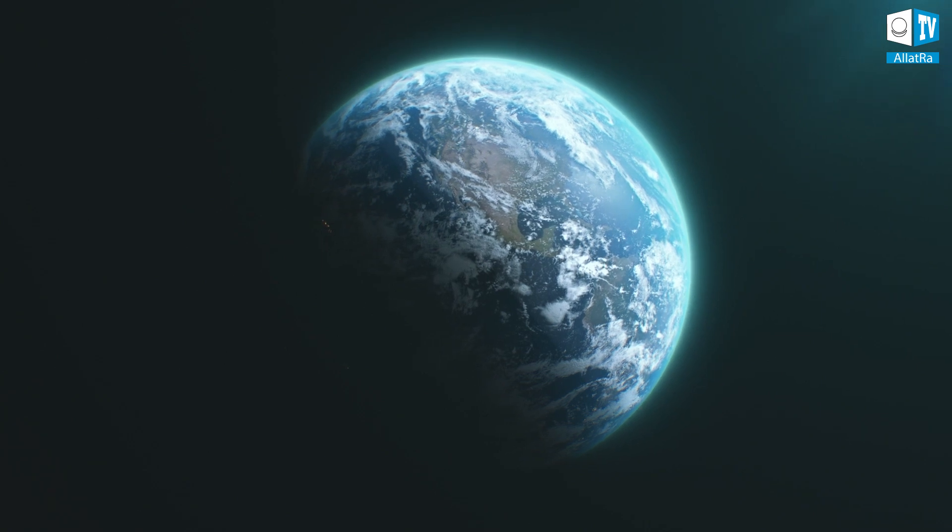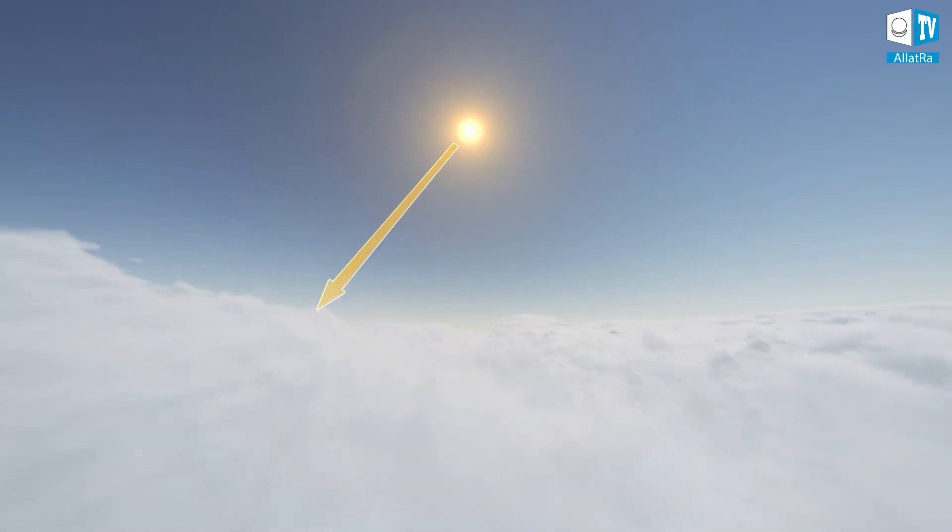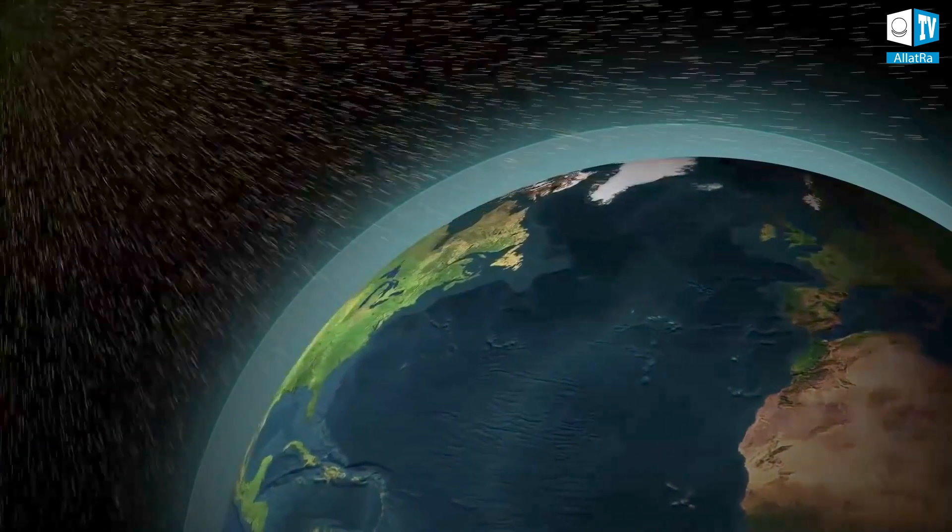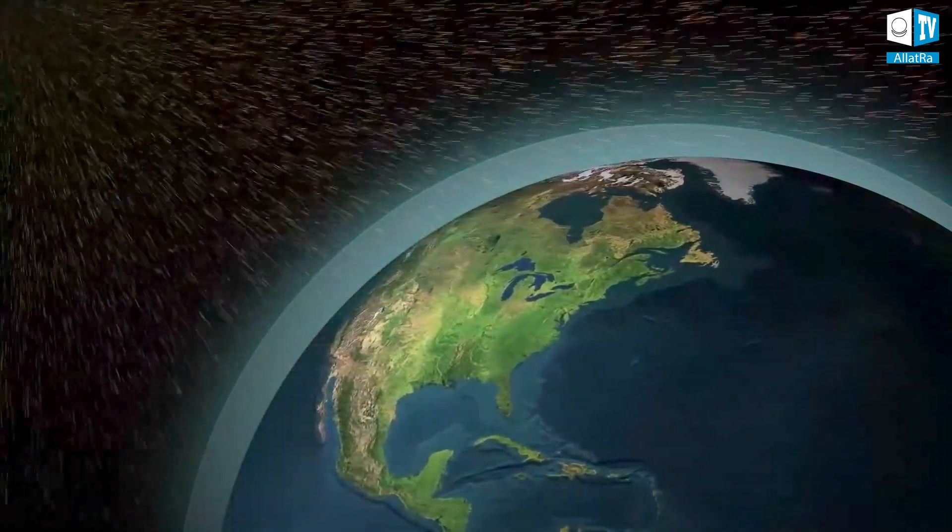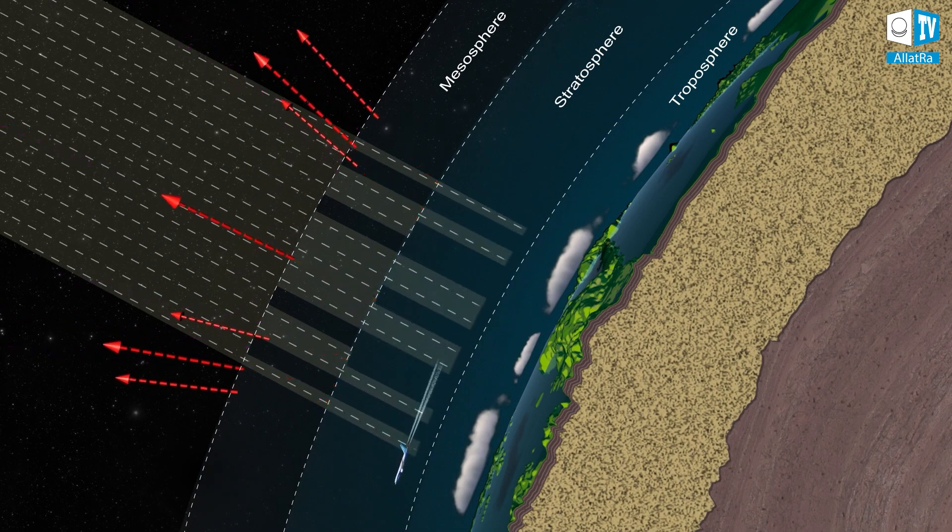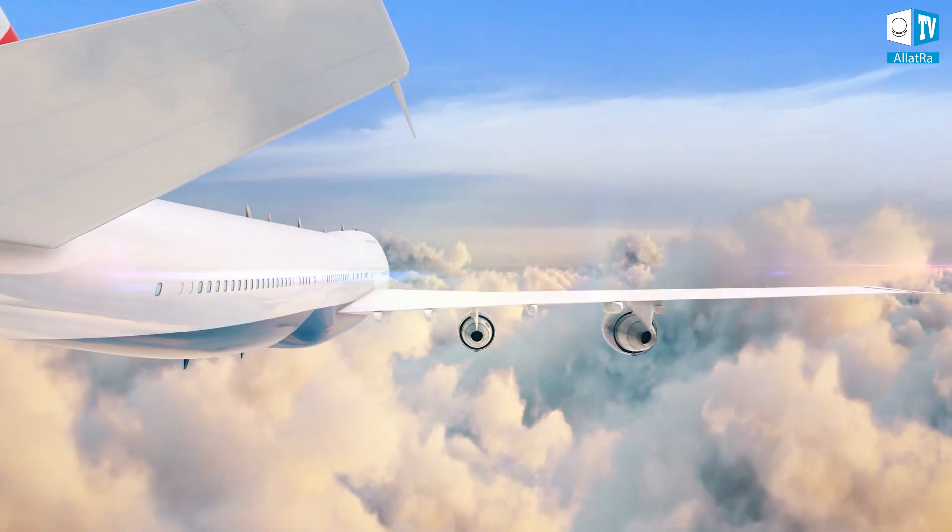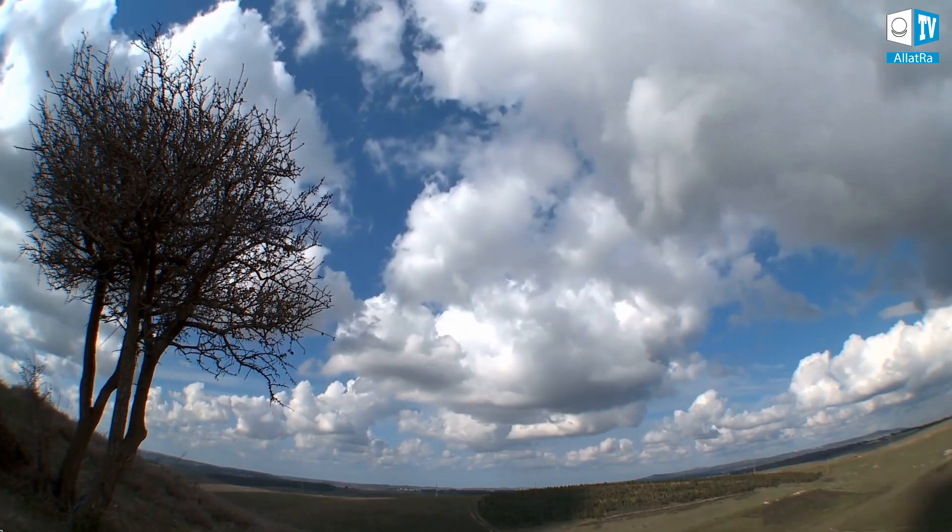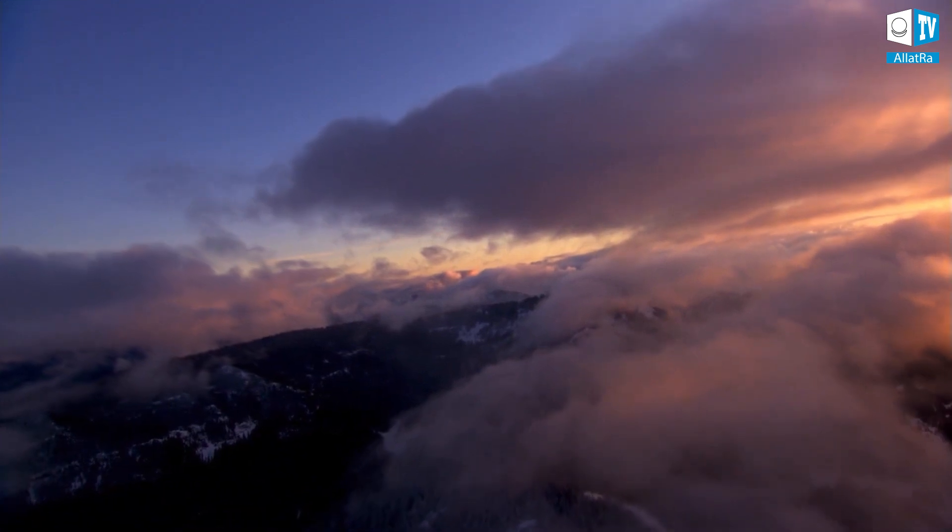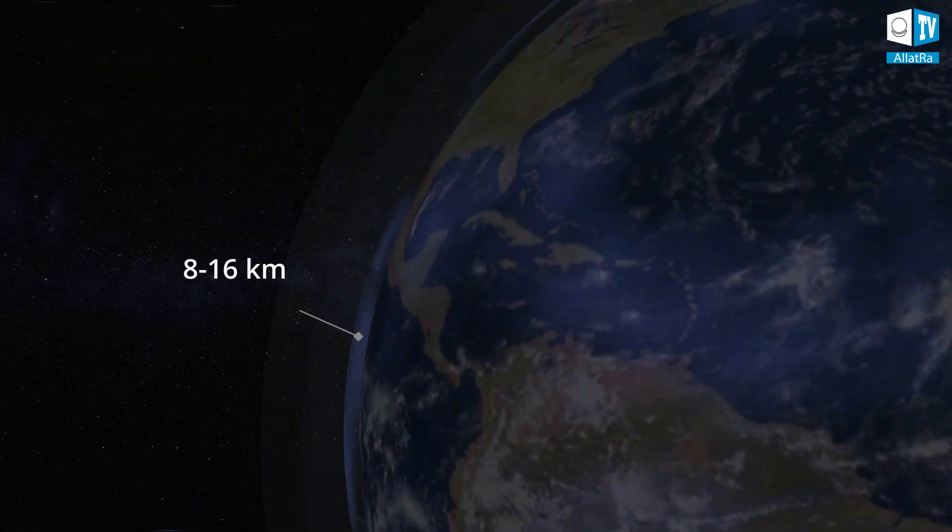The atmosphere is a gaseous envelope that rotates along with the Earth as a single whole and regulates the flow of heat and cold, creating comfortable conditions. Its role is to protect living organisms from destructive cosmic impacts. It is like the protective plating of a ship. It consists of several basic layers. Each layer of the atmosphere performs a different function. The troposphere is the lowest layer of the atmosphere. Because of its properties, the near-surface layers of the troposphere are the main habitat for all living organisms, plants, animals and humans. Clouds and all meteorological phenomena occur here. The height of this layer is about 8-16 kilometers.